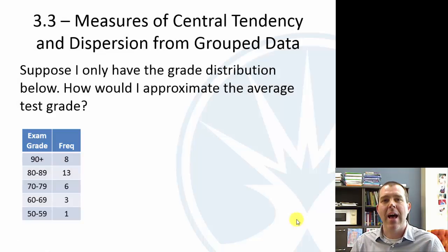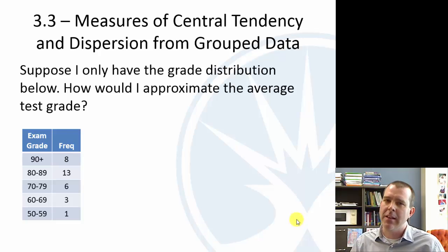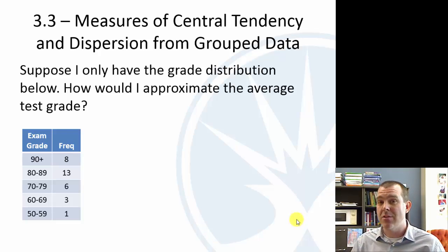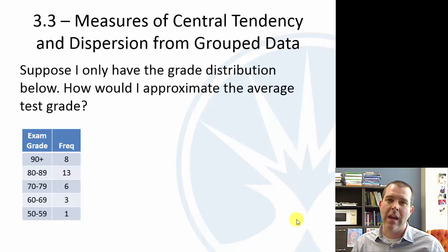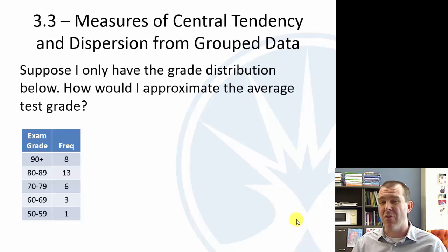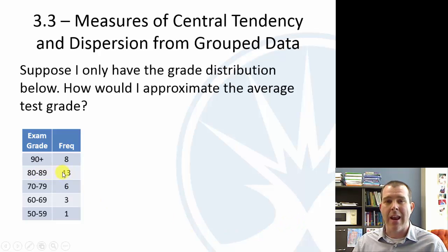Suppose I have this grade distribution. All I have are the letter grade ranges: A, B, C, D, F. So all I know is there were eight students that got 90 or higher, 13 students that got 80 to 89, etc., and I want to approximate the average test grade. I don't know exactly what grades those were within each range.